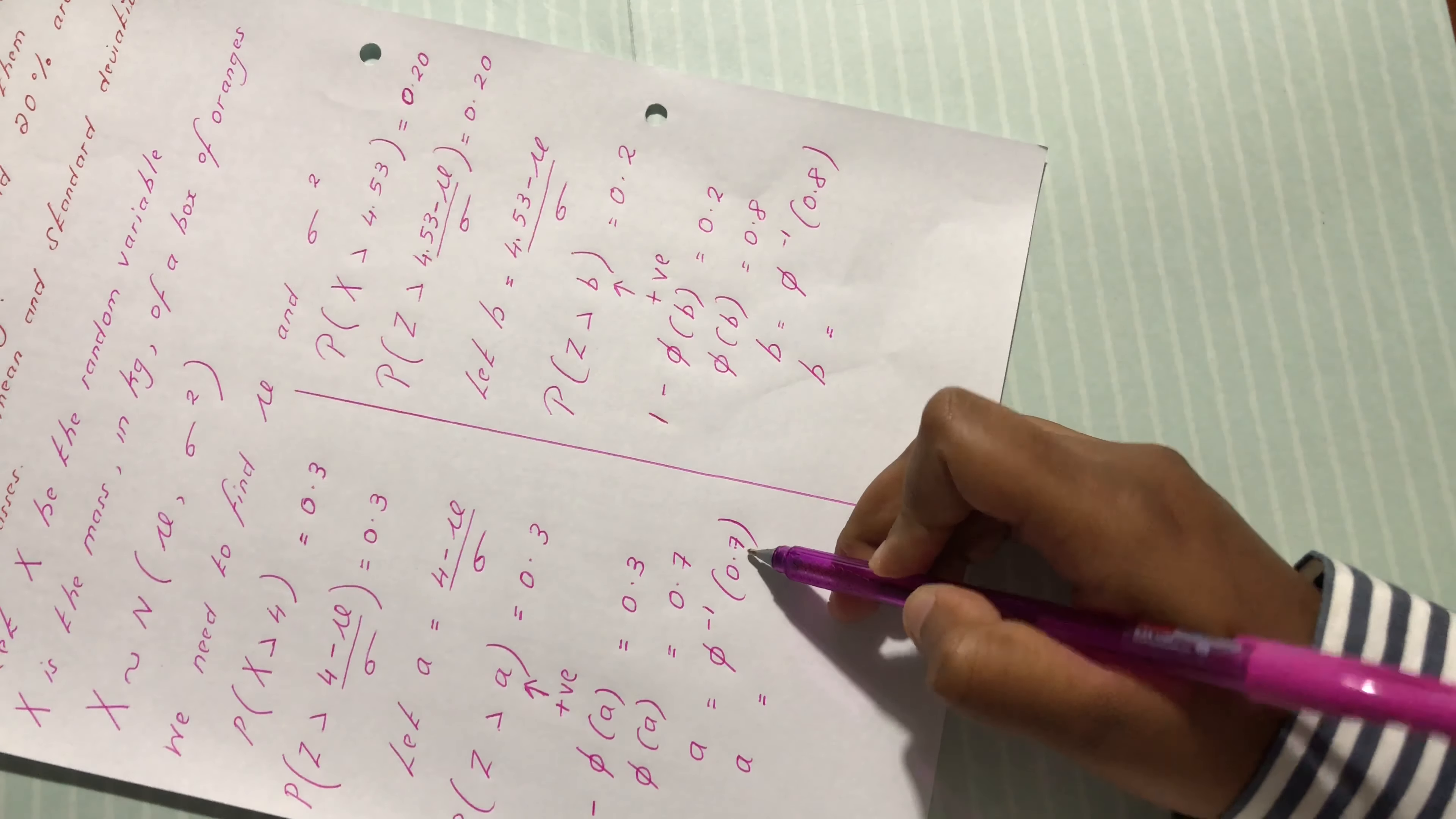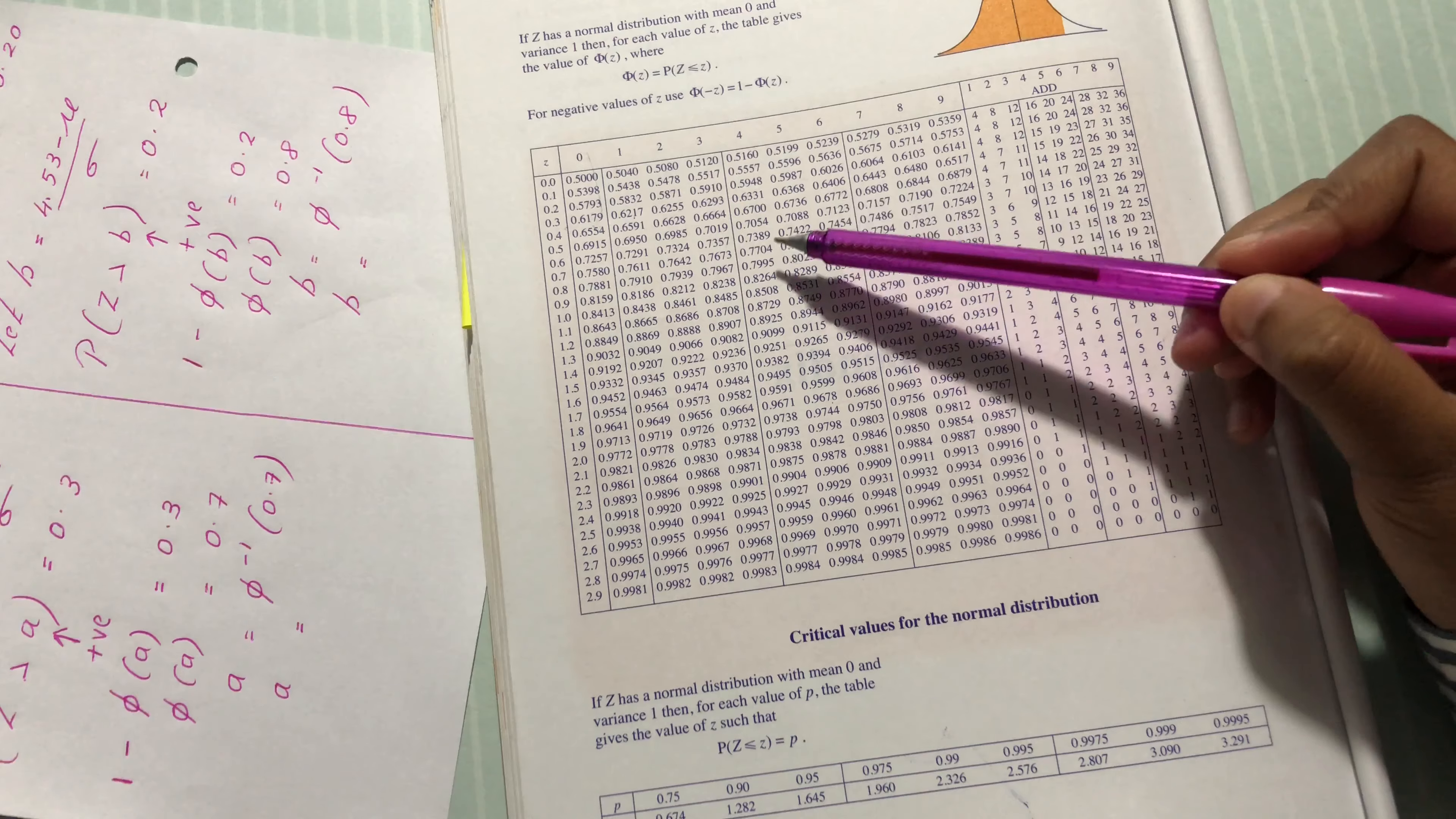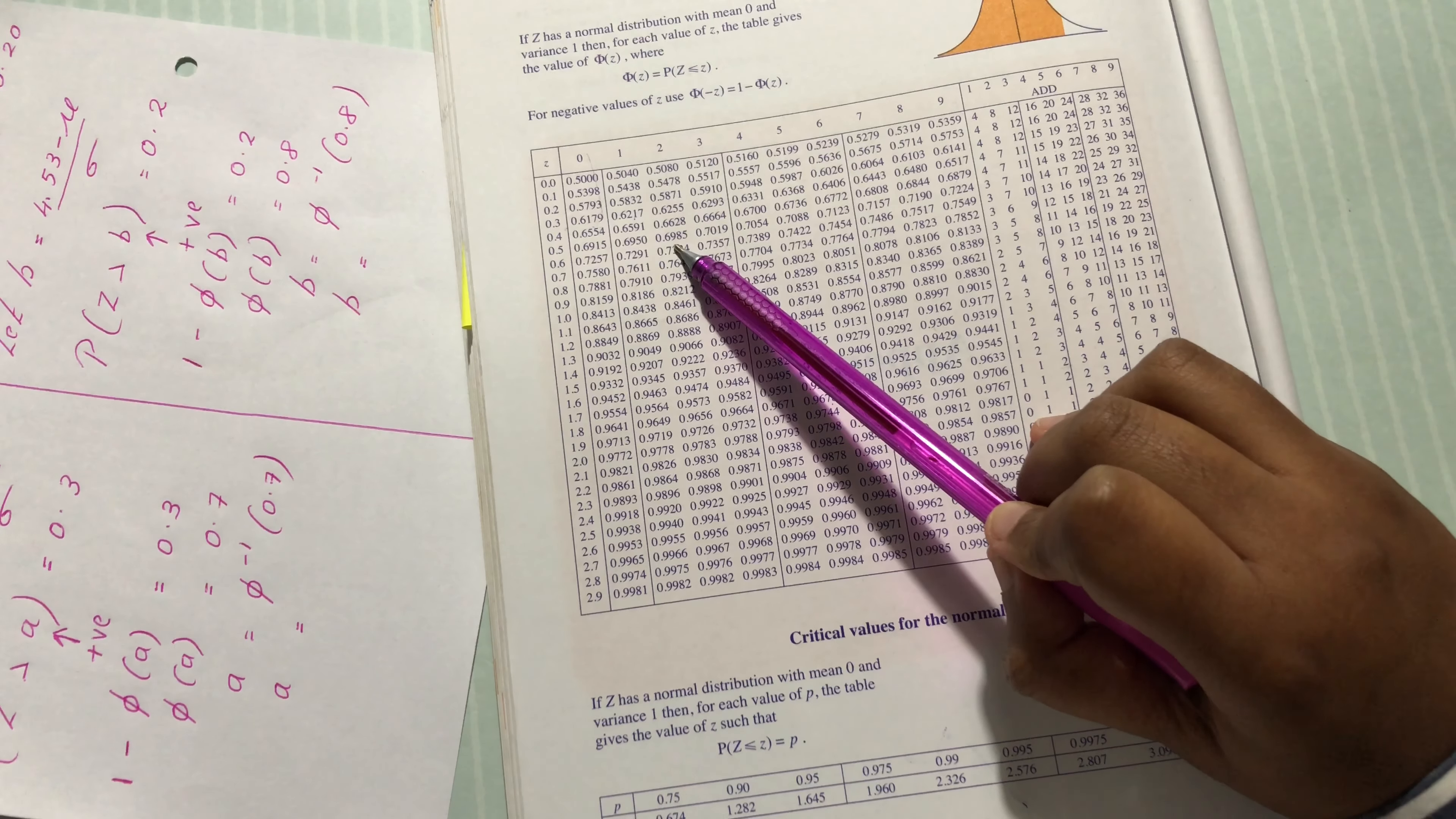We look for 0.7 and 0.8 in the table. 0.7 would not have the exact value, but we need to find a value below it. We need a value of 0.6 something. We're going to take 0.6985.